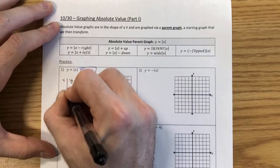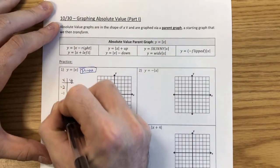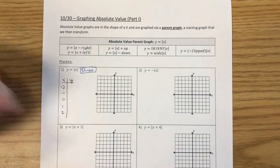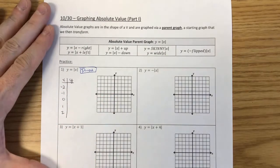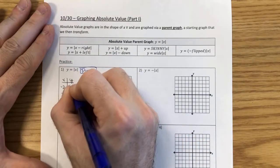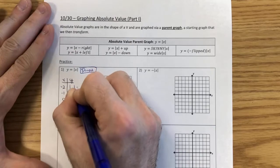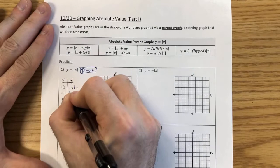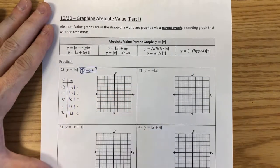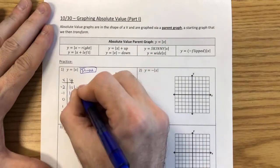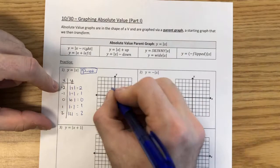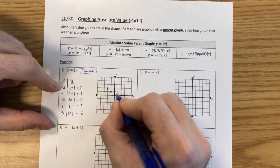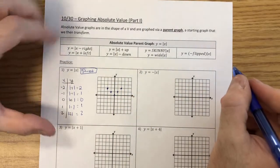To build the parent graph, I'll use x values negative 2, negative 1, 0, 1, and 2. The absolute value turns each into its positive counterpart: 2, 1, 0, 1, 2. Plotting those points: (negative 2, 2), (negative 1, 1), (0, 0), (1, 1), (2, 2). This creates the V shape, staying a perfect diagonal going up-left and up-right. This parent graph — centered at the origin, unshifted and unflipped — is what we'll compare all our transformations against.